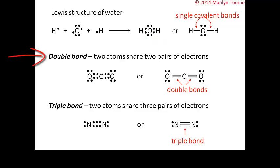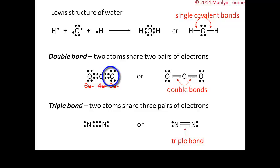What about double bonds? Double bonds are found in molecules like carbon dioxide. A double bond is when two atoms share two pairs of electrons. Carbon has four valence electrons and each oxygen has six, so for everyone to achieve an octet, carbon must share two pairs of electrons with each oxygen. You can represent this in dot notation or with double lines — both show the same thing. Similarly, a triple bond is when two atoms share three pairs of electrons.